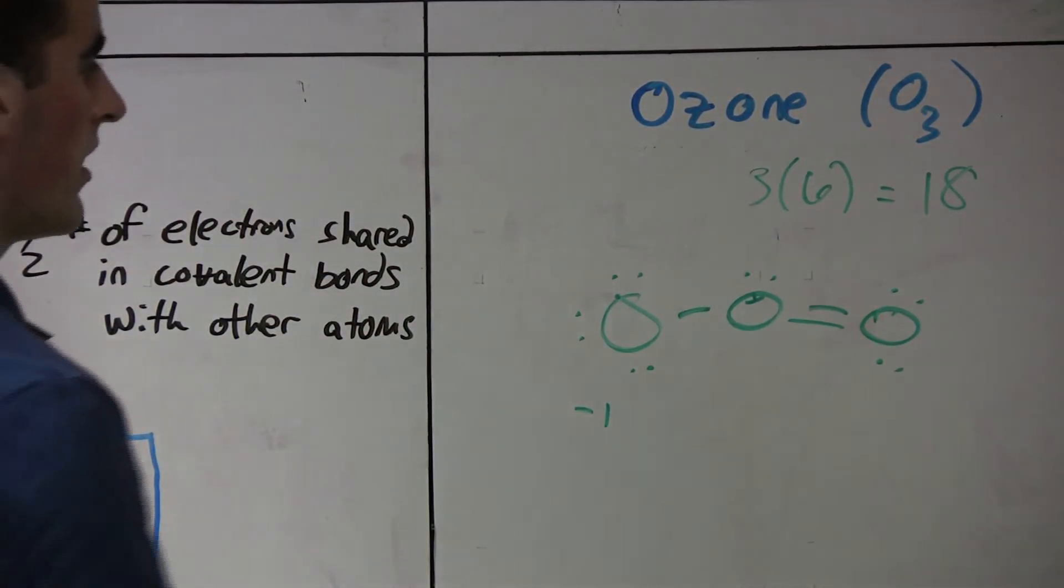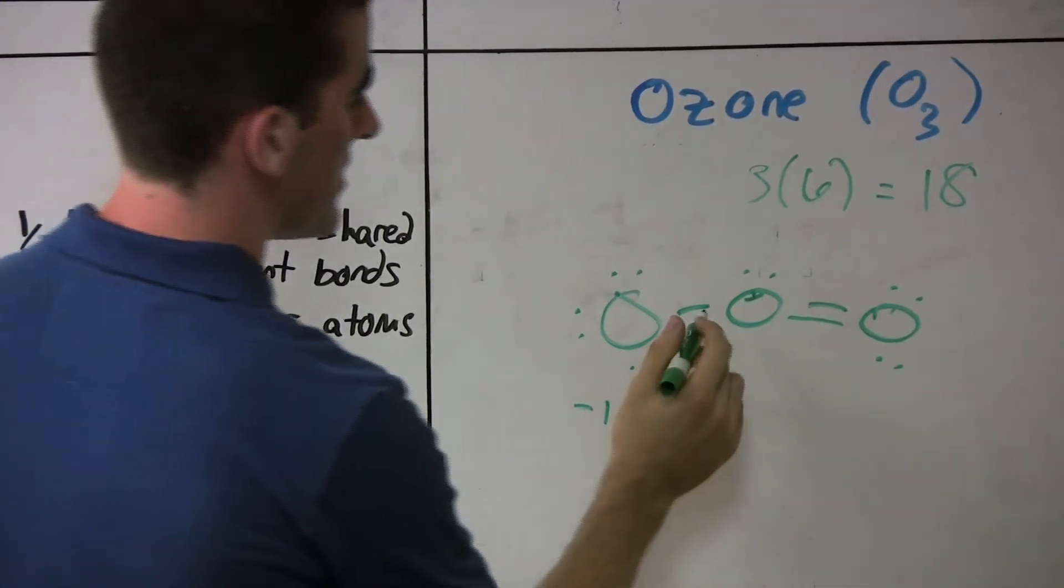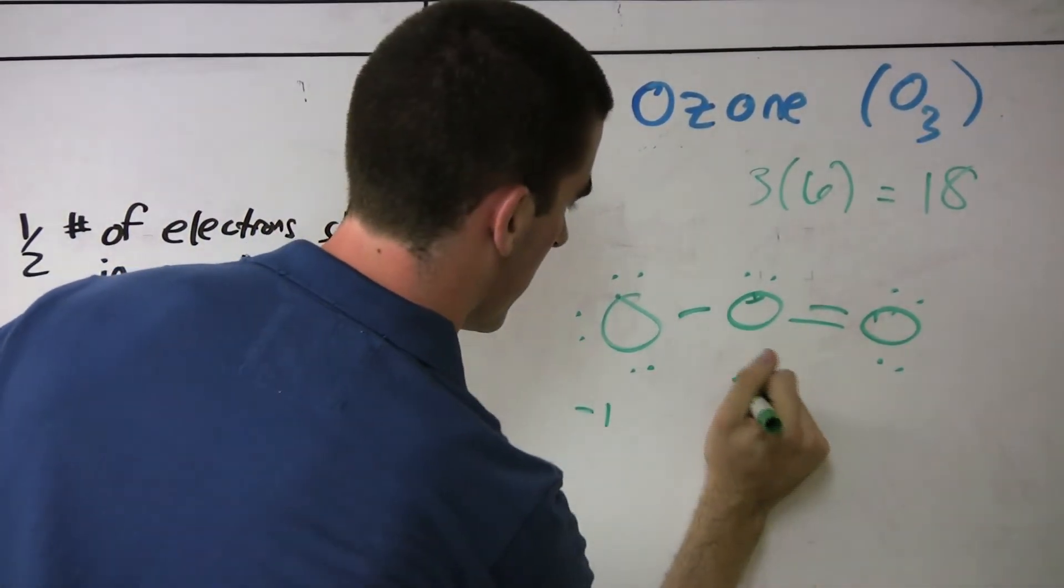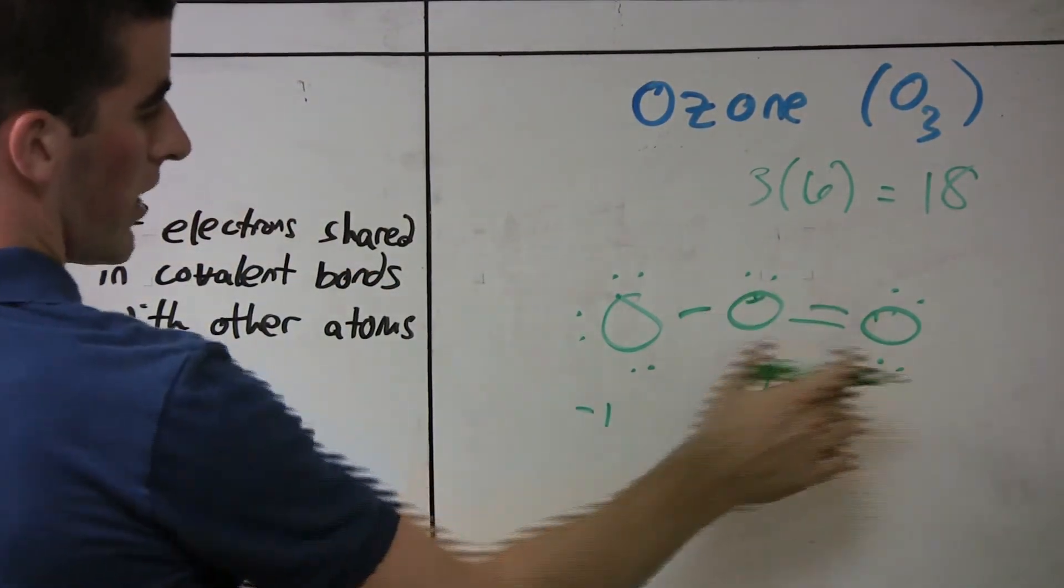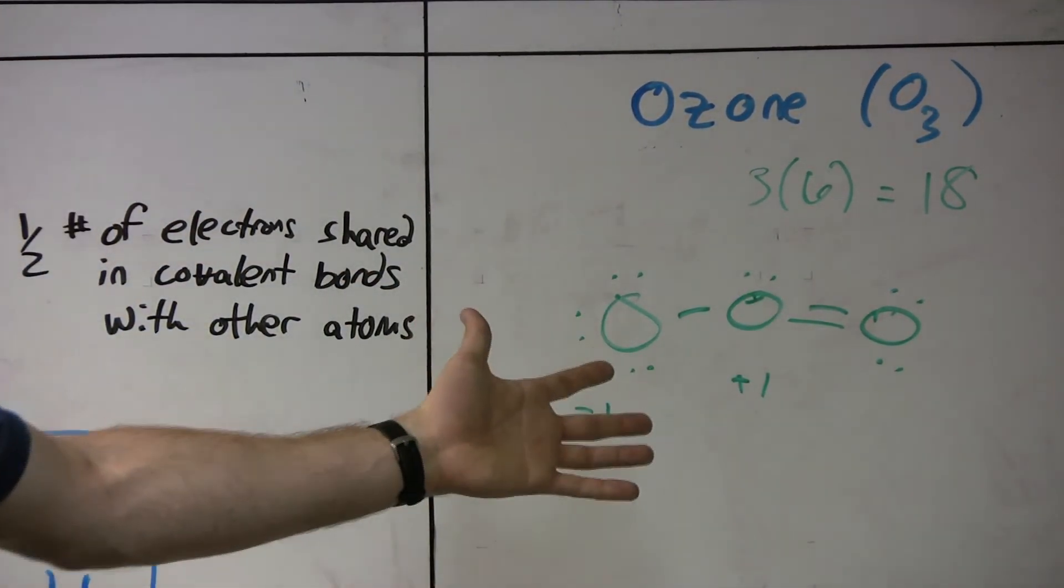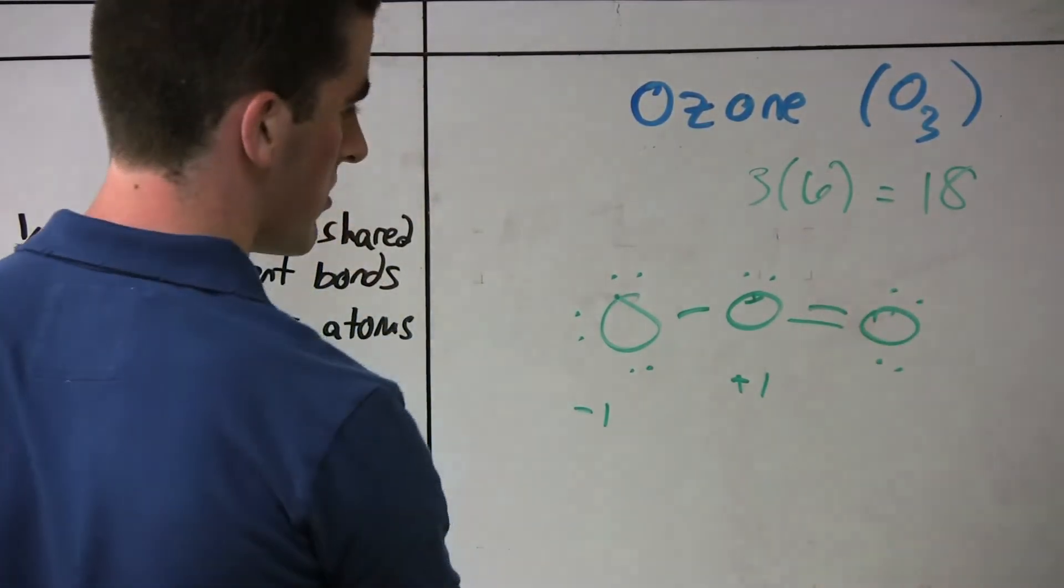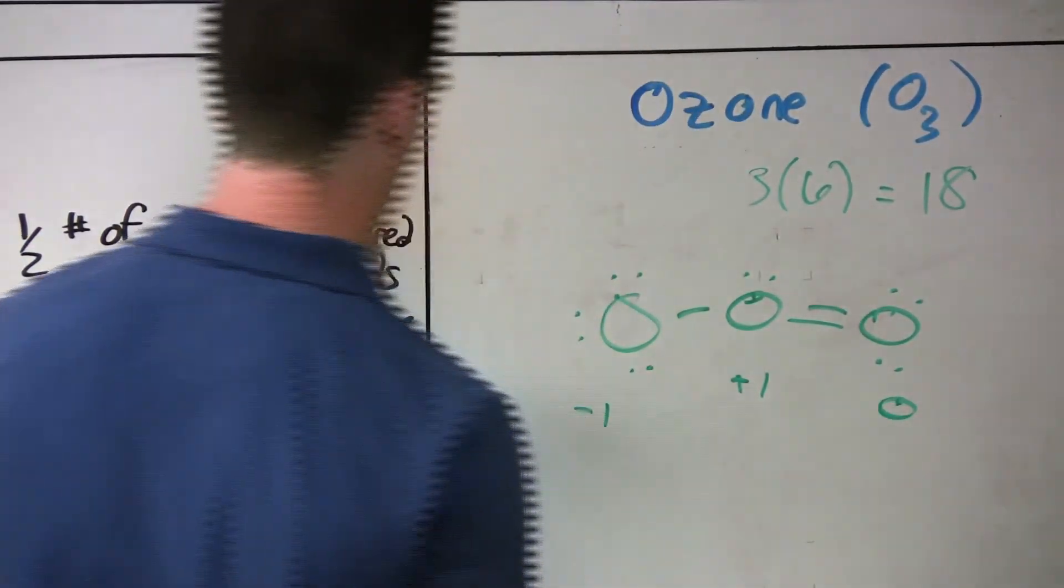If we apply the same thing here, we get six minus three minus two equals plus one. And then the one on the right here, oxygen, this is its normal bonding state: six minus two minus four equals zero. So the formal charge here is zero.